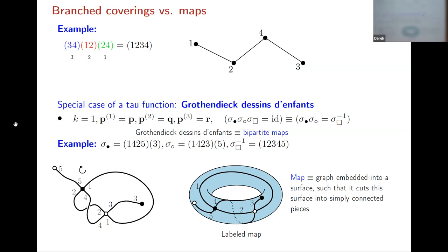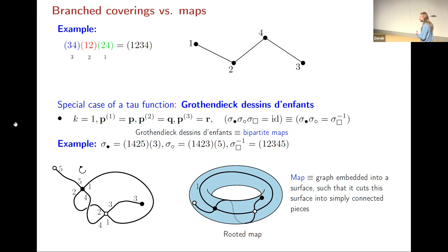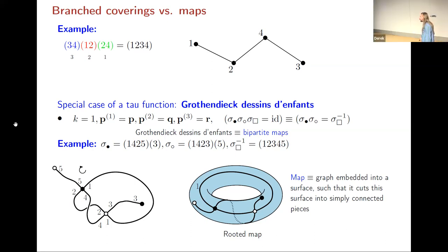This construction is exactly a correspondence between labeled maps and factorizations of identity as a product of three permutations. The transitivity condition has a very nice description in terms of maps: it means the map is connected. And when we take the logarithm of the generating function, we are no longer counting labeled maps but rather maps where only one edge is fixed — called a rooted map.